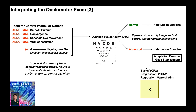So make sure to check those out. Hopefully this video gave you a good understanding of what to do if your patient presents with results consistent with a hypofunction or results consistent with a central vestibular deficit. In the next few videos, we're going to be covering adaptation exercises and habituation exercises in much more detail, so make sure to stick around for those.